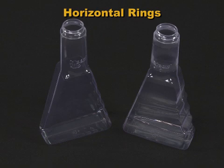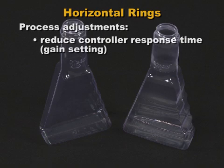Another cause of pressure rings can be the parison programmer over-correcting. In this case the horizontal rings will not match the extruder RPM. A solution is often to reduce the controller response time — the gain setting.